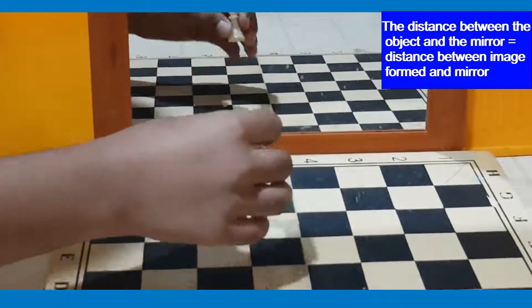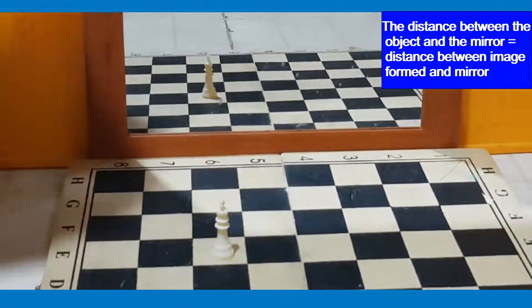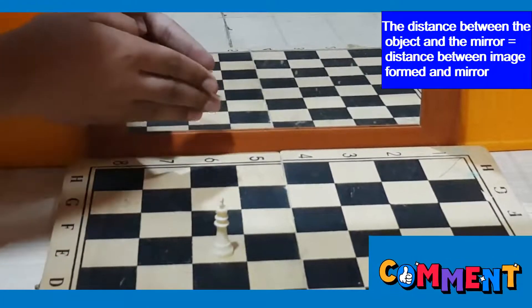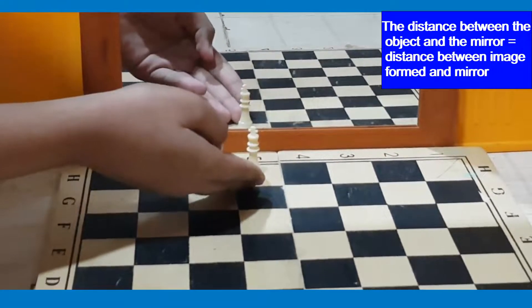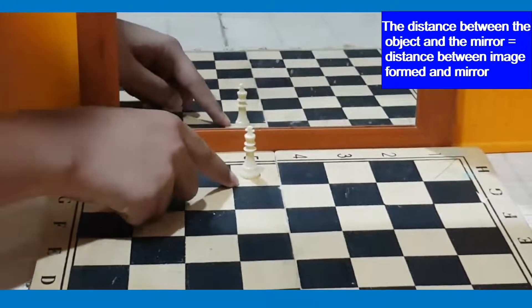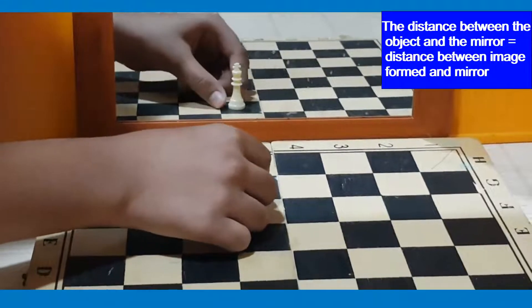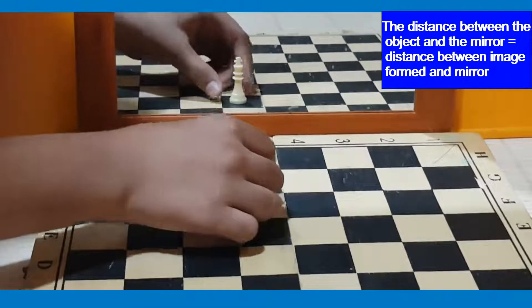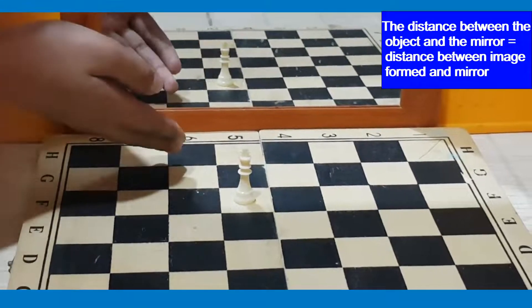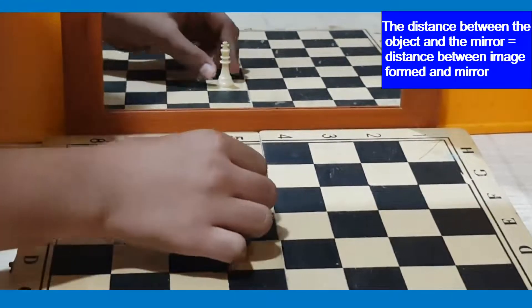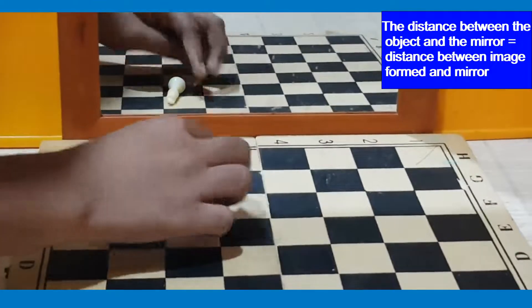Then we had learnt about the same distance. So this is that the distance between the image and the mirror is same as the distance between the object and the mirror. So if I keep the chess piece on the first block of the chess board, in the image also it is on the first block. If I take it behind it goes the same distance back. So it is formed that much distance behind. The object is three blocks in the front and the image is three blocks behind the mirror. If I take it right, if I take it left, no matter where I take it, it's going to be the same distance.